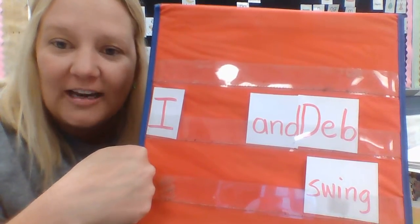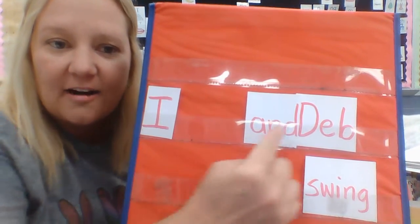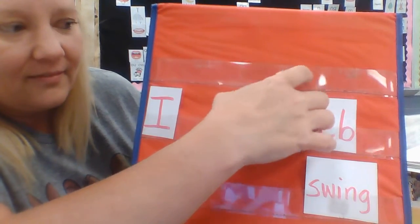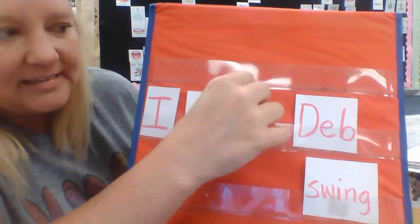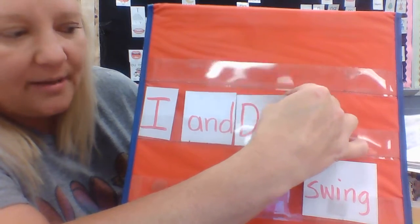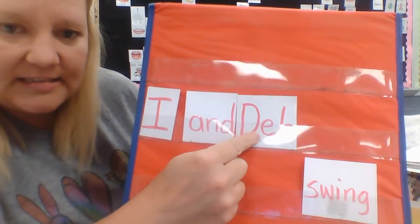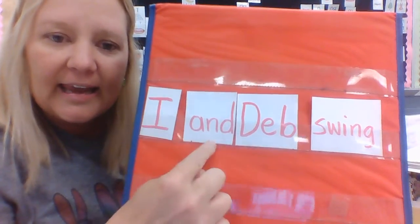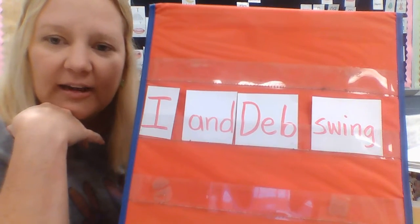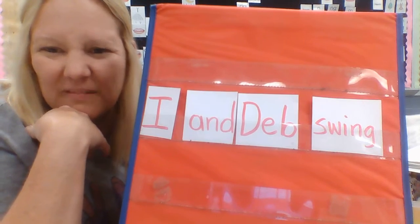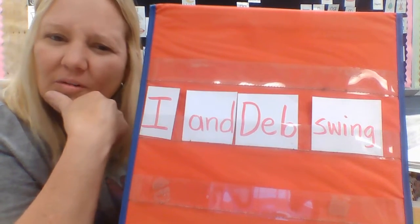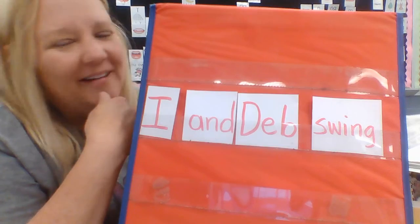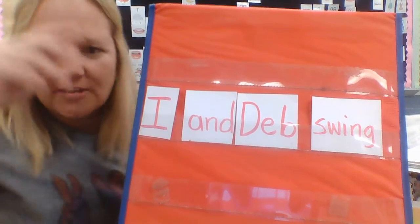We know that good readers read from left to right. So when we're writing sentences and reading them, we have to start on the left and end on the right. So we have: I and Deb swing. I and Deb swing. Does that make sense? Kind of. Does it sound right, though? I don't think it sounds right. Do you hear people talk like that — 'I and Deb swing'? No, that doesn't sound right. Maybe we still need to switch the words around some.